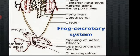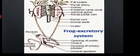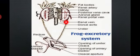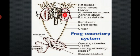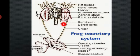You have to see the diagram of the excretory system of a frog. This is a fat body; renal arteries are present. This is a pair of kidneys shown in red color and dark red color — a long, flat organ situated on either side of the vertebral column in the body cavity.